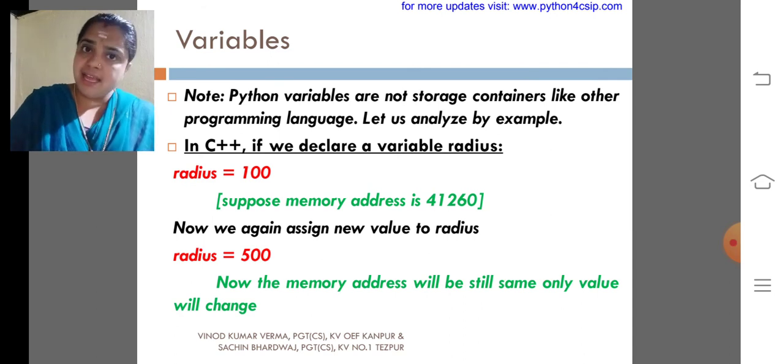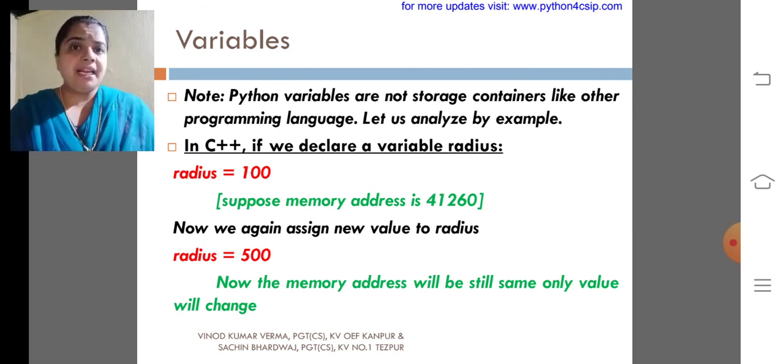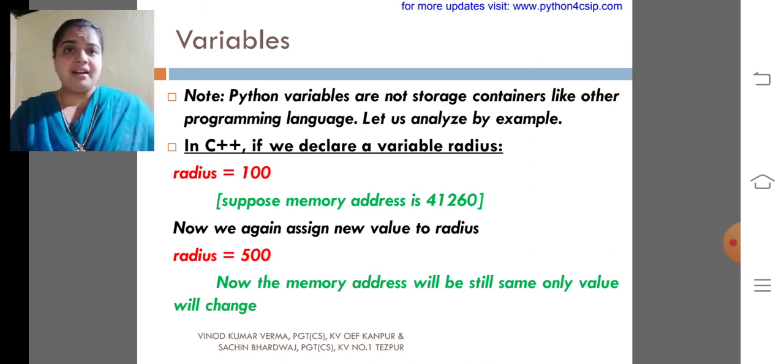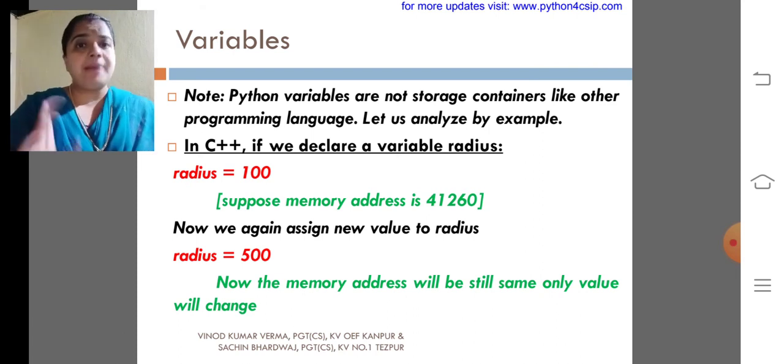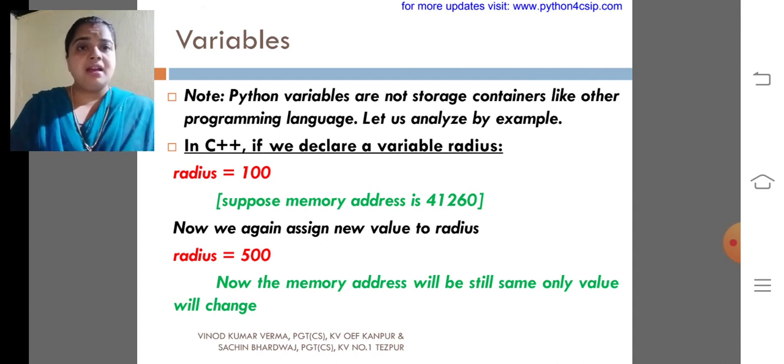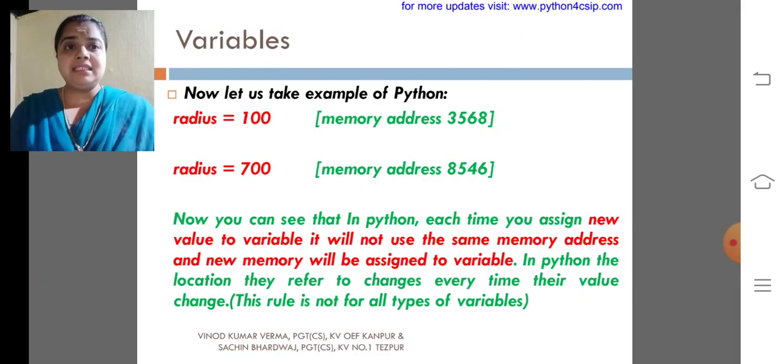Radius is stored in a particular memory address. Within that only we are saving 100, 200, 500 like that. But my dear children, it is not like in Python. This is about C++. Look at Python's variable.